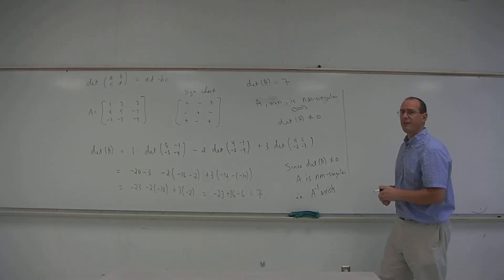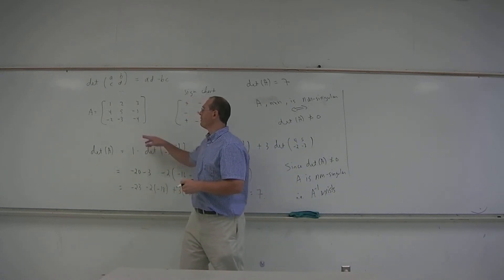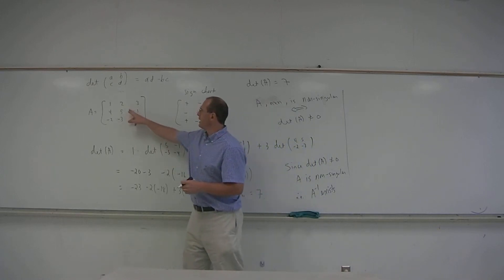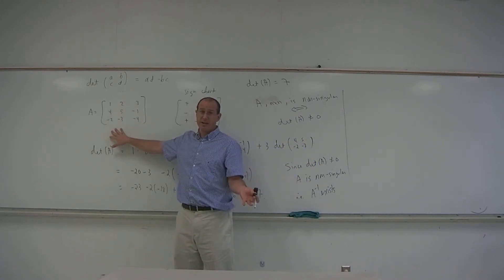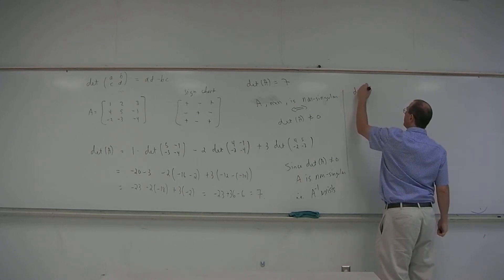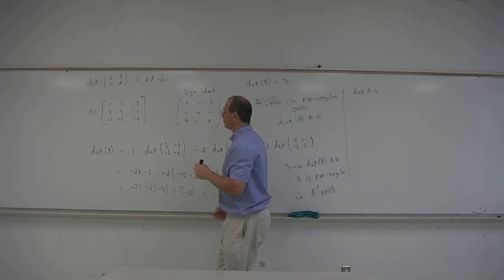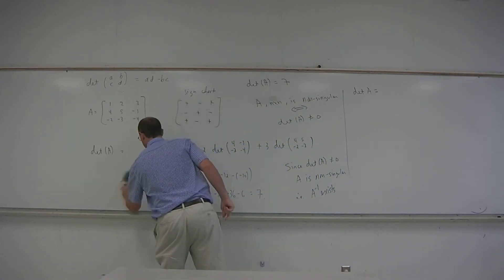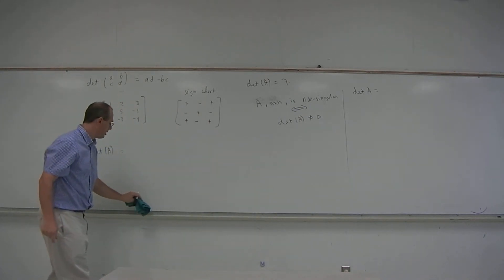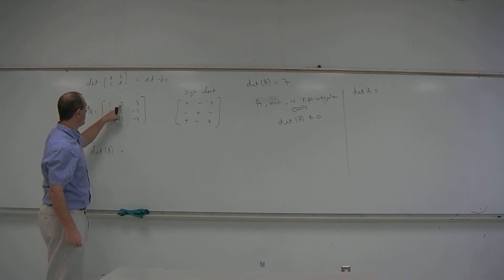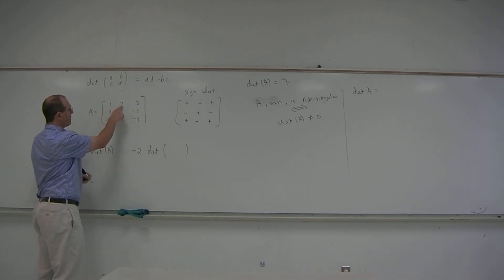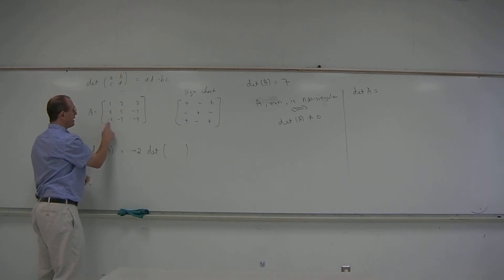Before we wind up this video, I want to point out that the Laplace expansion can be done using any row or any column — that's why we need a sign chart. As an example, let's compute the determinant of this same matrix using the second column, and we should get 7. The entry 2 goes with a minus, so minus 2 times the determinant of the matrix obtained by removing row 1 and column 2: 4, negative 1, negative 2, negative 4.